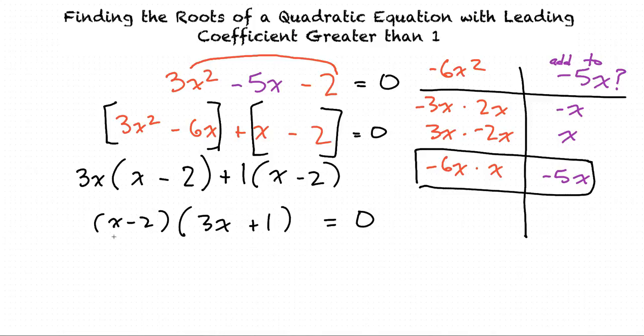To find the roots, we will separate both factors into two equations equal to 0. x - 2 = 0, and 3x + 1 = 0. We'll solve the first equation by adding 2 on both sides, which leaves us with x = 2.